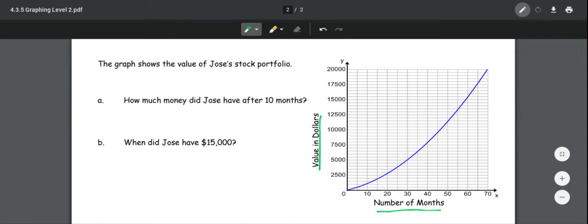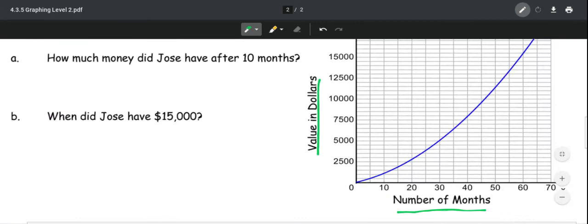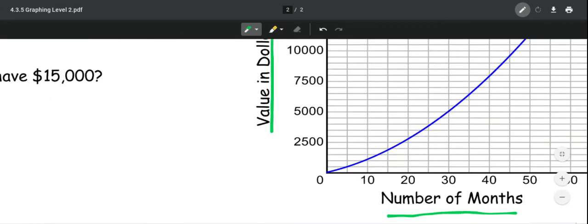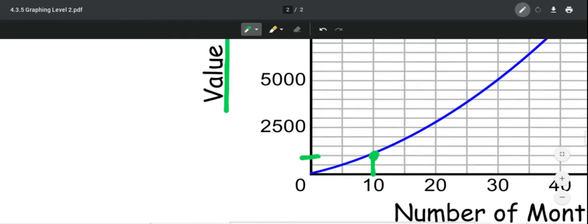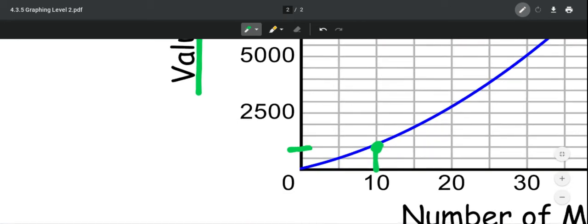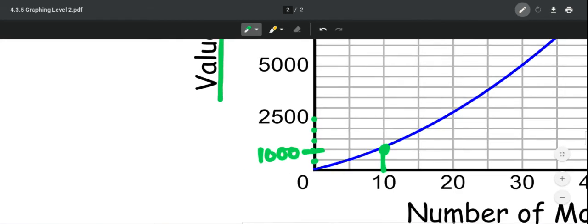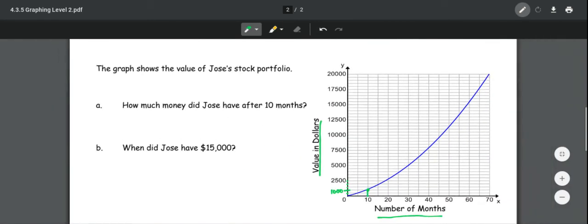So how much money did Jose have after 10 months? So if we look here, 10 months, we went up. It's about there. Now we have to figure out the units, which is sometimes a little bit tricky. So we went up 1, 2, 3, 4, 5 to get to 2,500. So each is going to be 500. Or you can take 2,500 and divide by 5 since there's 5 slots. So this is going to be 1,000. So how much money did he have? He had $1,000.